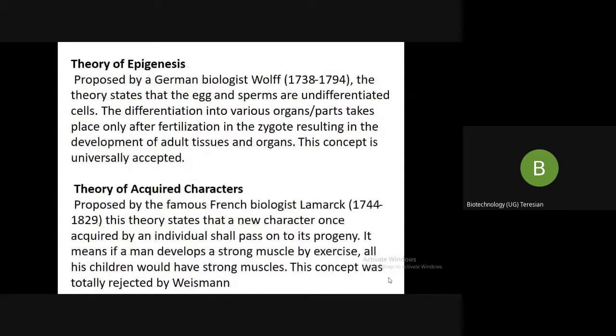The theory of epigenesis was proposed by a German biologist. His theory stated that the egg and the sperm are undifferentiated cells. Differentiation into various organs or parts takes place only after fertilization in the zygote, resulting in the development of adult tissue and organs. This concept is universally accepted.